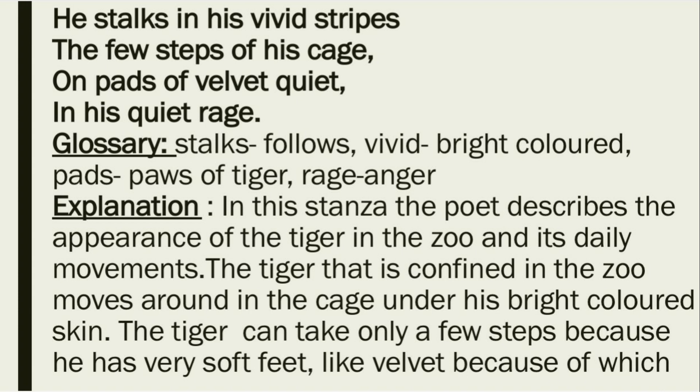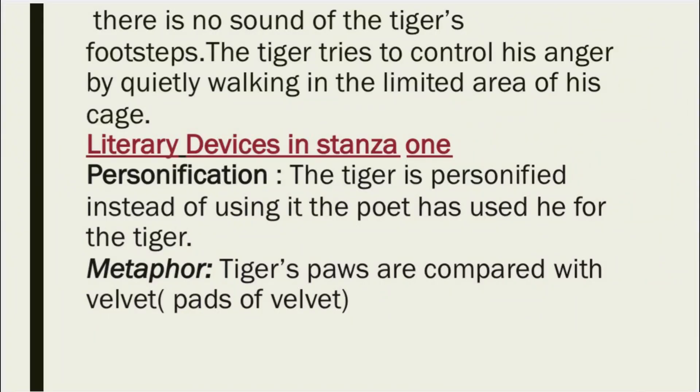In this stanza, the poet describes the appearance of the tiger in the zoo and its daily movements. The tiger confined in the zoo moves around in the cage under his bright-colored skin. The tiger can take only a few steps because he has very soft feet like velvet, because of which there is no sound of the tiger's footsteps. The tiger tries to control his anger by quietly walking in the limited area of his cage.